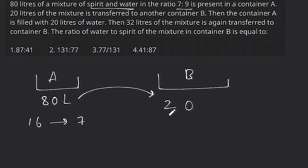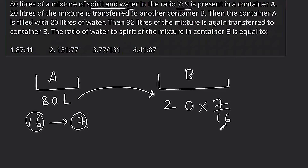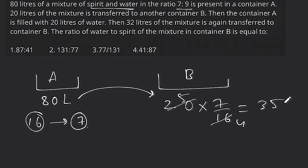What is the spirit in 20 liters? It is 7 by 16. The mixture has 7 as spirit out of 16 total parts (7+9=16). So spirit in 20 liters is 7/16 × 20 = 35/4. So 35 by 4 is the spirit transferred.